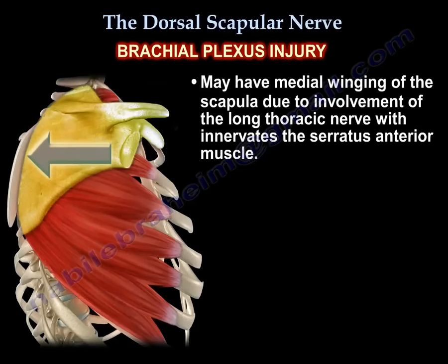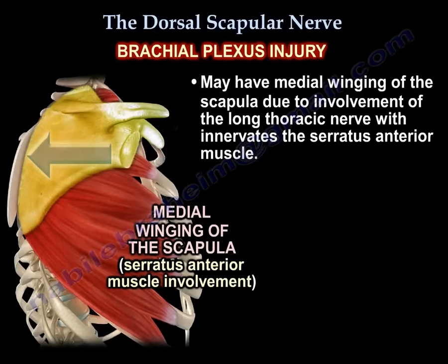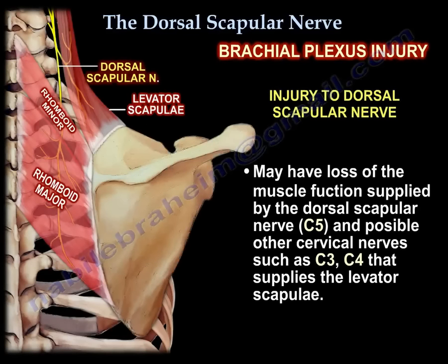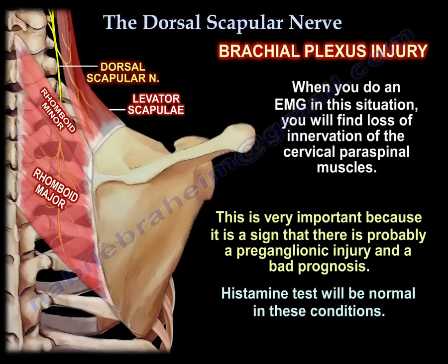You may have medial winging of the scapulae due to long thoracic nerve involvement. You will also have loss of muscle function from muscles supplied by the dorsal scapular nerve at C5, and possibly other cervical nerves such as C3 and C4 supplying the levator scapulae. On EMG, you will find loss of innervation of the cervical paraspinal muscles, which indicates a likely preganglionic injury with bad prognosis, and the histamine test would be normal in this condition.